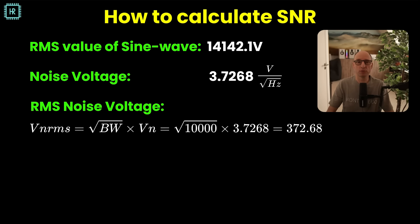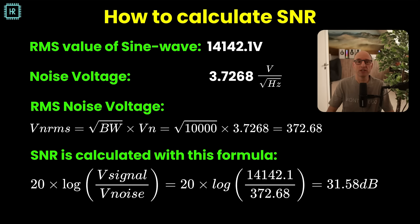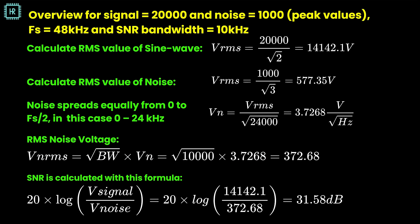So you must know the SNR value of the calibration signal. The SNR is the ratio in decibels between the signal and the noise. The resulting SNR is 31.58 dB. So now you know exactly what SNR the QA403 should show when you apply the calibration signal. I've laid out all the calculation steps on a single page — you can pause the video here to review them.